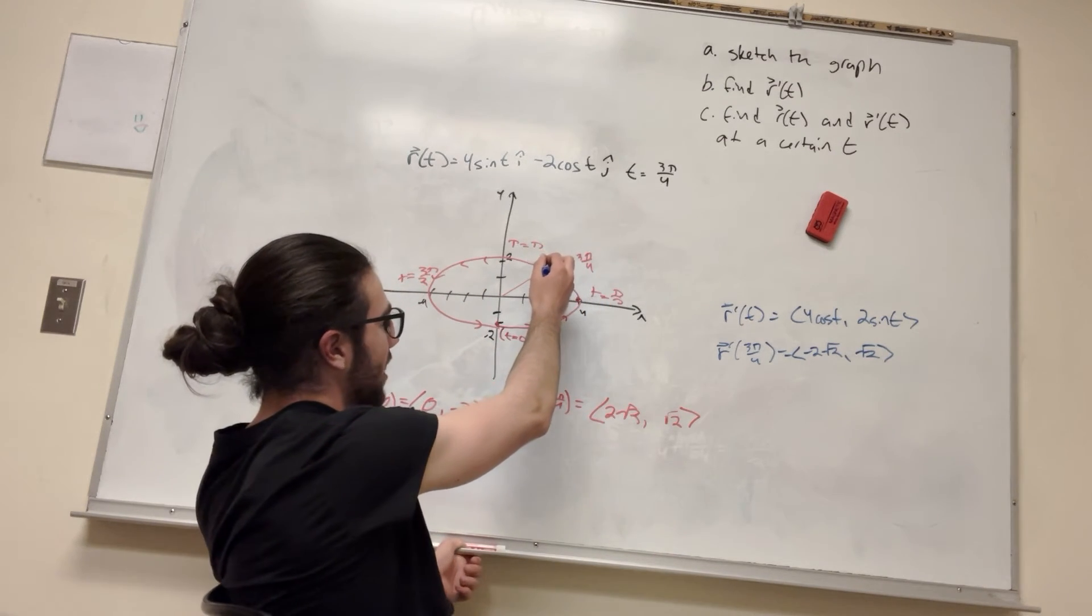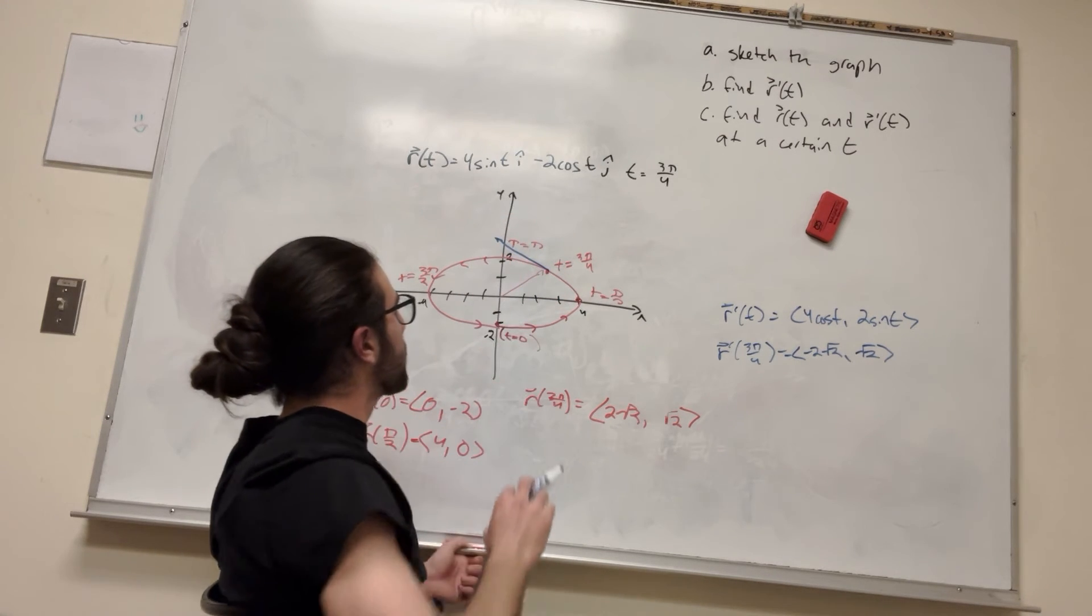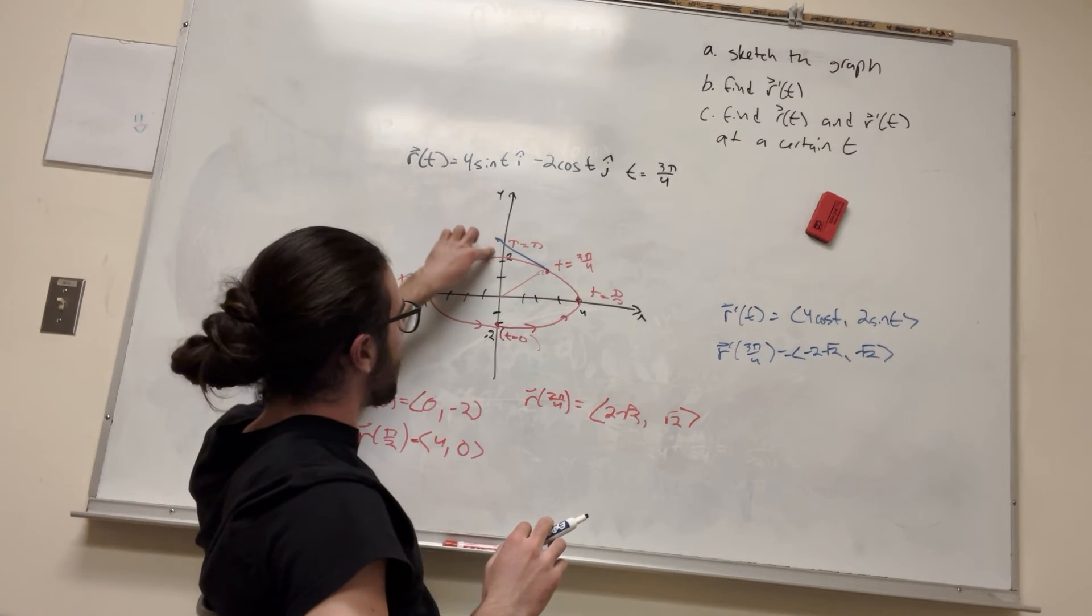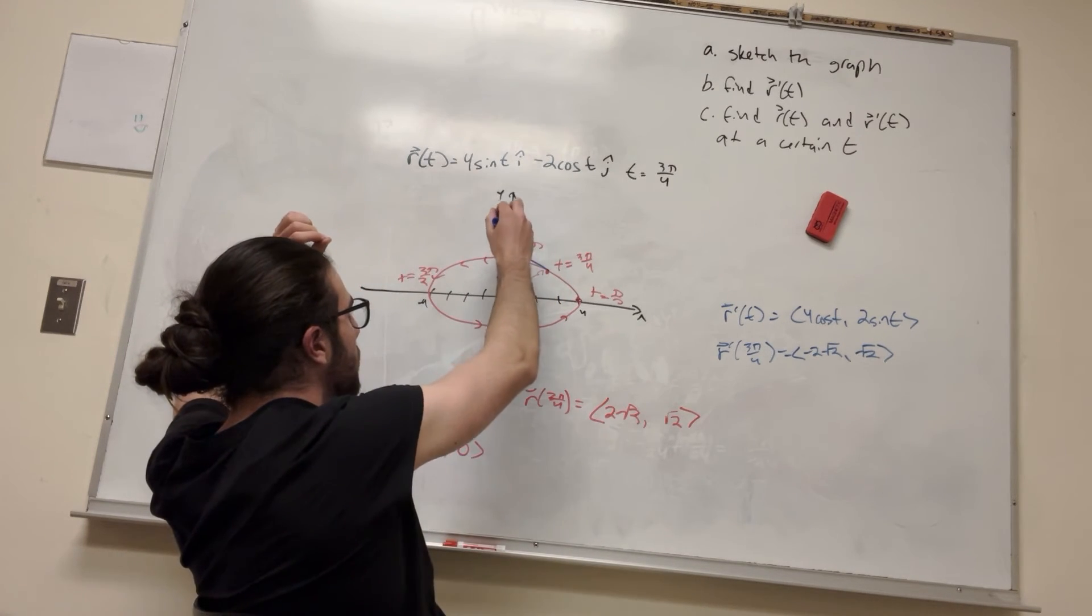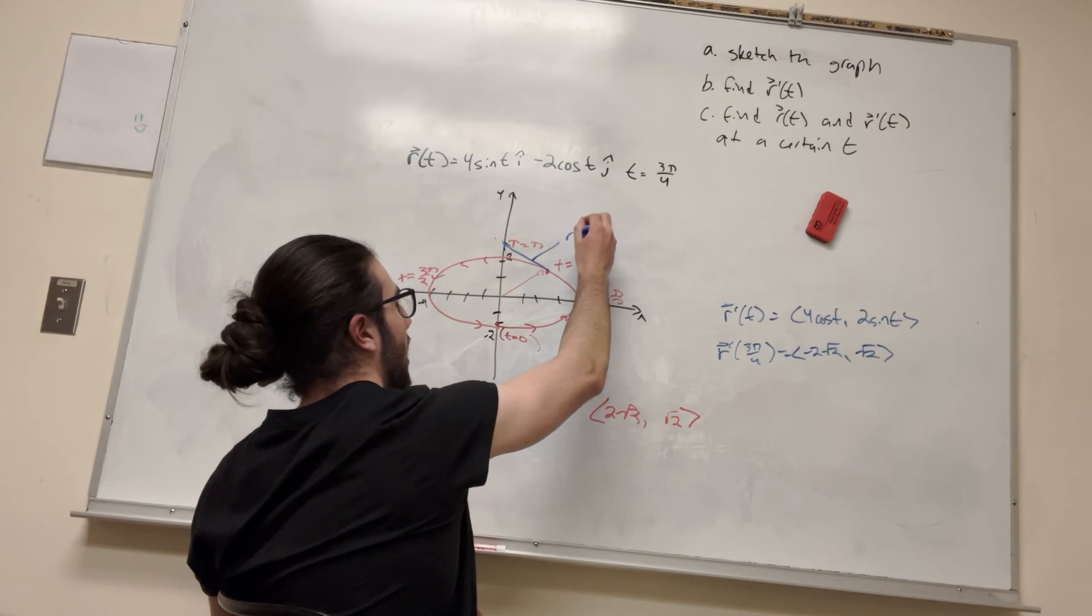So what's it going to look like? Well, it's actually going to look like this. I don't know exactly how far that goes, but probably about that much. Now, it probably stops about right here. Boom, there you go. This is r prime of t. Or r prime of 3π over 4, right there.